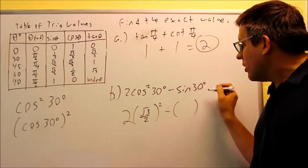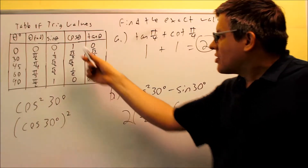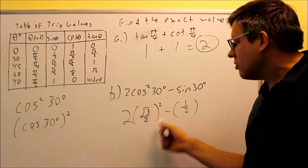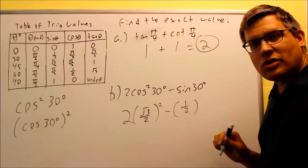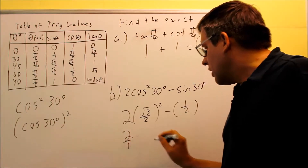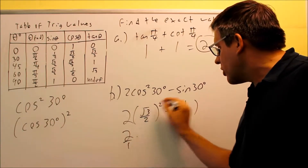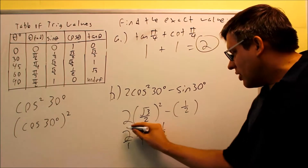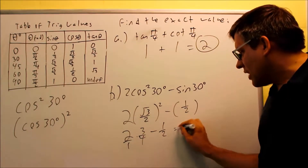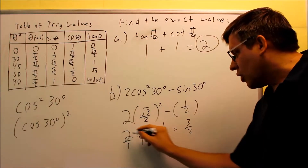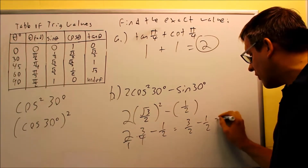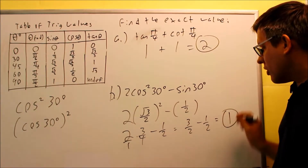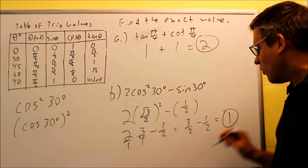Cosine 30, looking at the cosine column for 30 degrees, gives square root of 3 over 2. That entire value goes inside the parentheses to be squared. Sine 30 comes off the table as 1/2. So you have (√3/2)² minus 1/2. Squaring top and bottom: square root squared gives 3, and 2 squared gives 4, so that's 3/4 minus 1/2. Reducing 3/4 gives 3/2 after simplification — wait, 3/4 minus 1/2 equals 3/4 minus 2/4, which gives 2/4 = 1/2. Actually simplifying: 3/4 minus 2/4 = 1/2... the exact value for B comes out to 1.